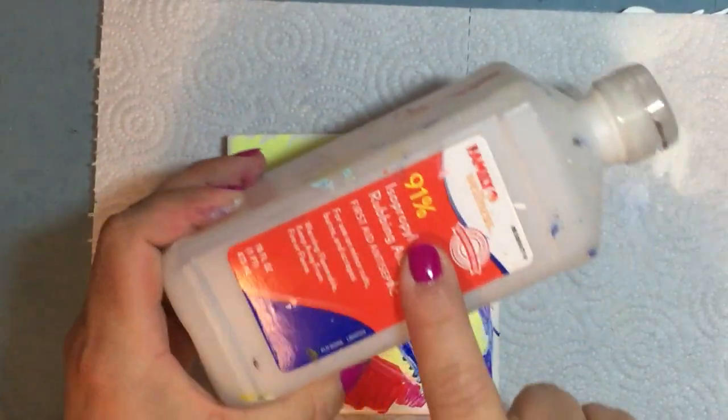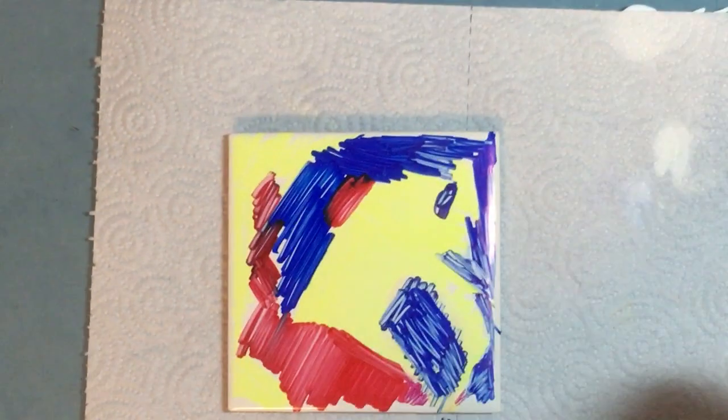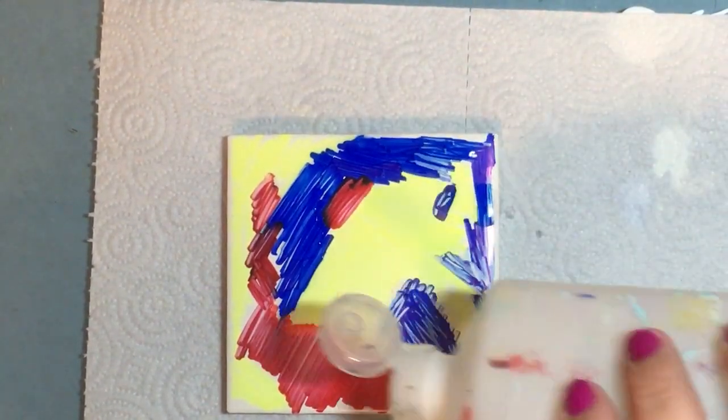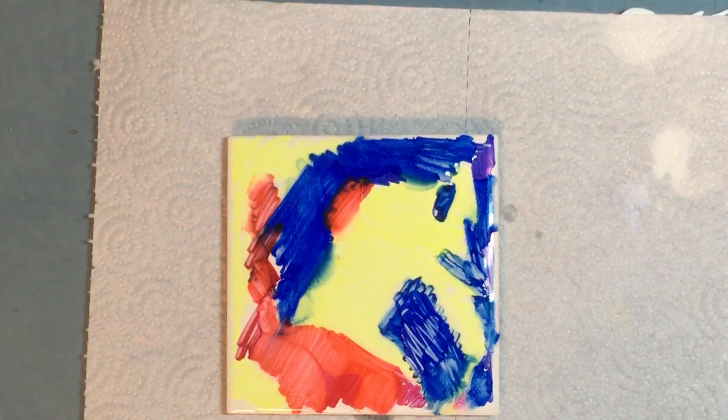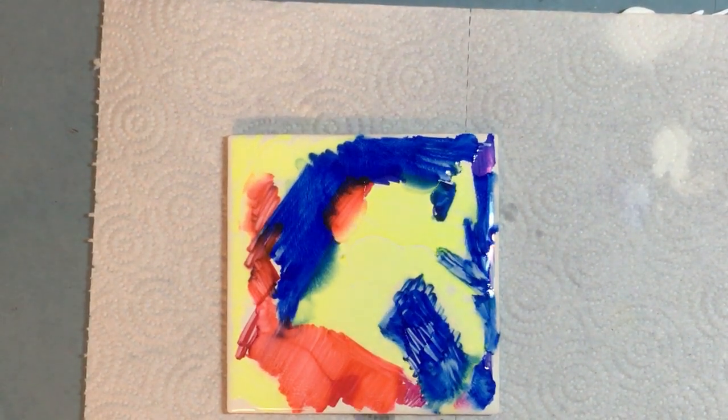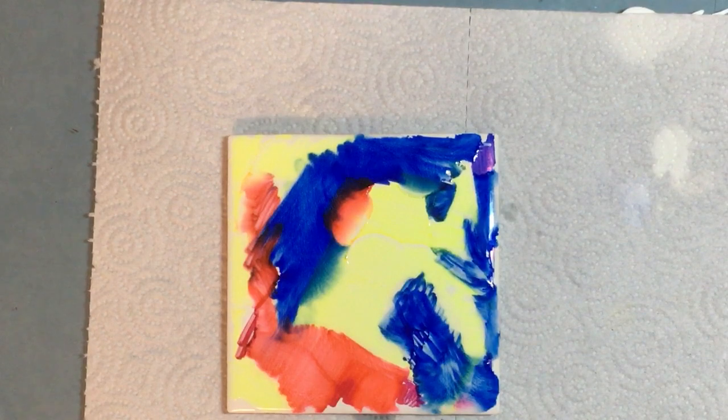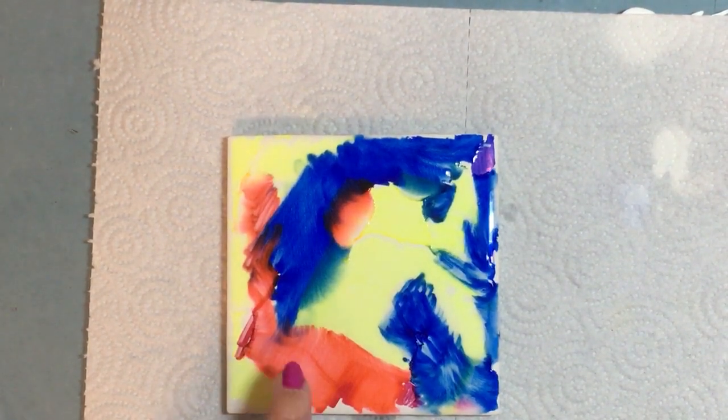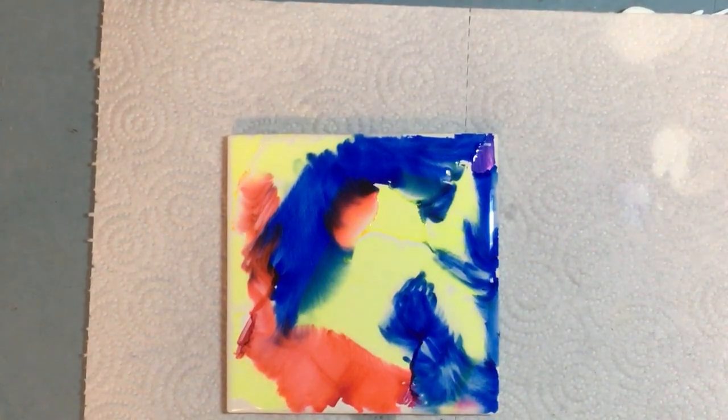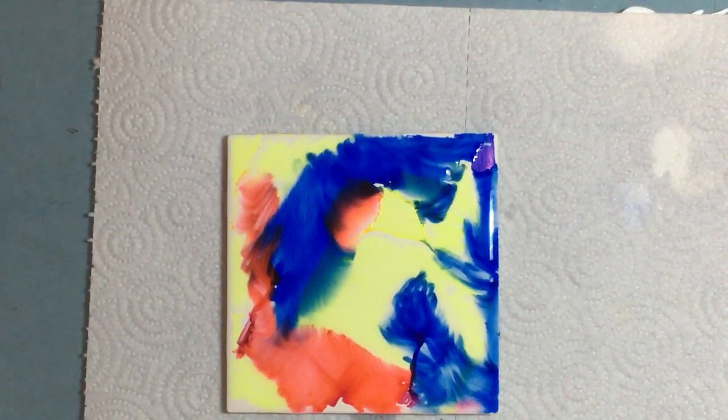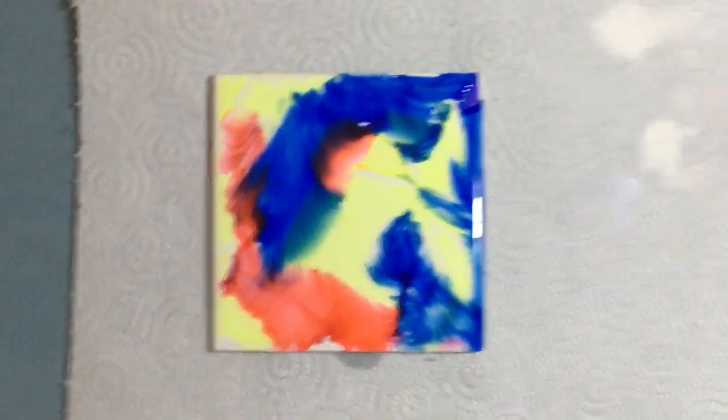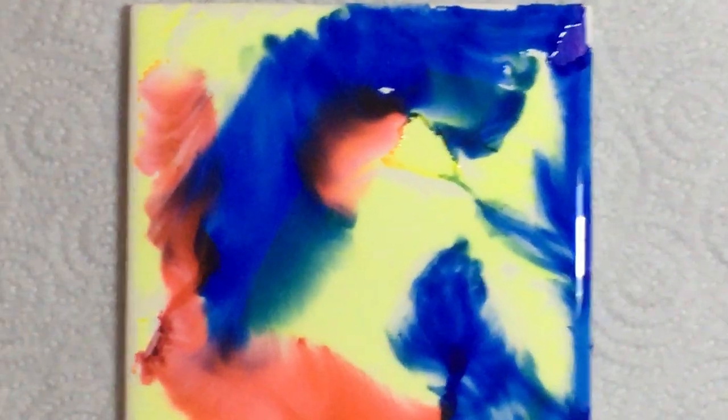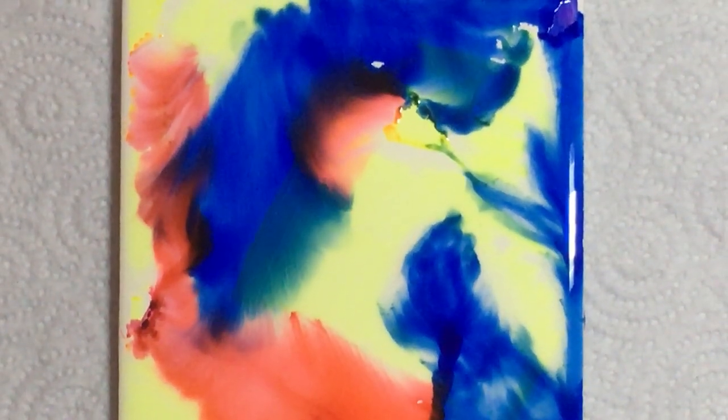Okay, so you take some 91% alcohol rubbing alcohol and you sprinkle it on top, and you just let the alcohol pretty much do its thing. Look at that, it's just traveling. I hope you can see that. I'm gonna try to get a little bit closer. It's about as high as magnification as I can go.